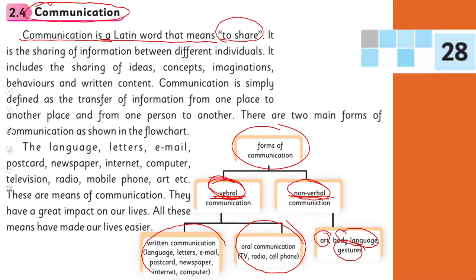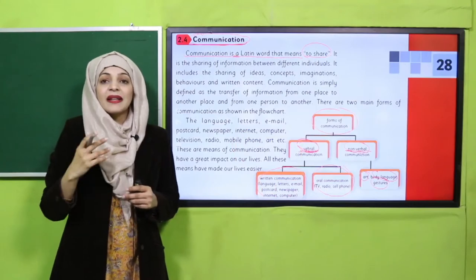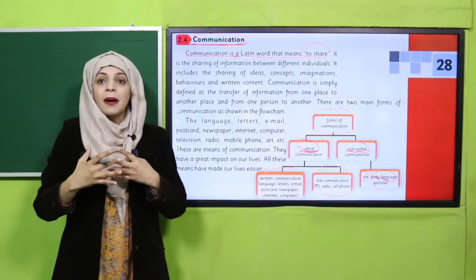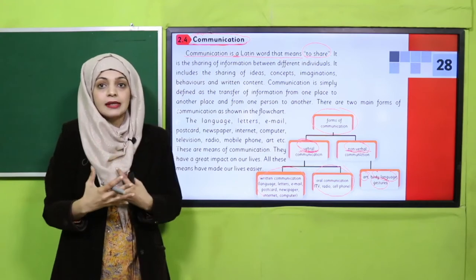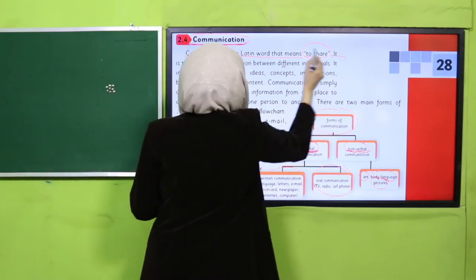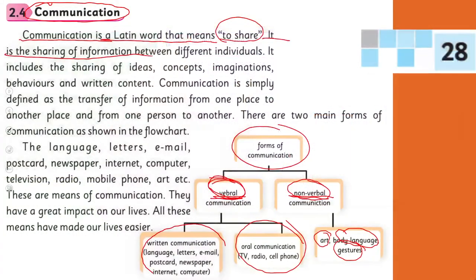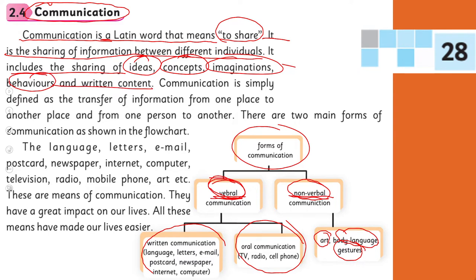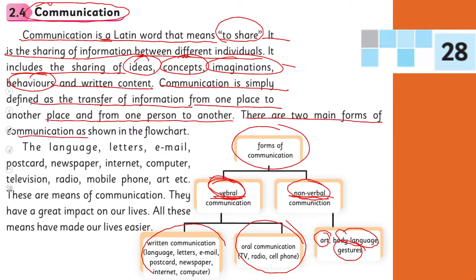It is the sharing of information between individuals. It includes the sharing of ideas, concepts, imagination, behaviors and written content. Communication is simply defined as the transfer of information from one place to another place and from one person to another. There are two main forms of communication shown in the flowchart.